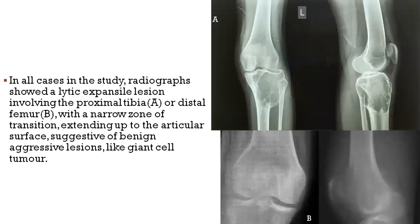These were the imaging findings for the two positive cases. X-ray A, AP and lateral views around the knee joint, shows a lytic expansile lesion in the proximal tibia extending up to the articular surface, showing multiple septations within it with no matrix seen. The borders are well defined and it is associated with cortical thickening — findings most likely representing a giant cell tumor. X-ray B shows a very similar lesion noted in the distal femur.